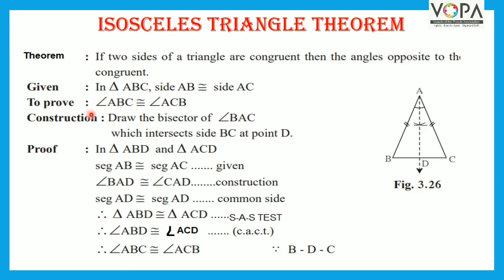We have to prove that the angles opposite to the sides are congruent. The angle opposite to side AC is angle ABC, and the angle opposite to side AB is angle ACB. Therefore, we have to prove angle ABC congruent to angle ACB.